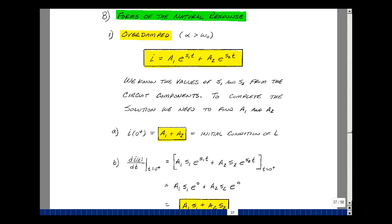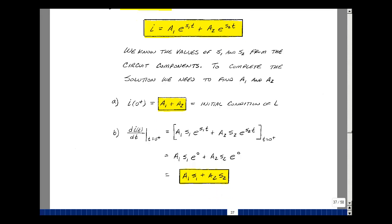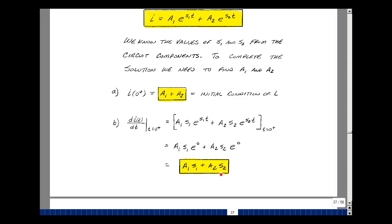We have relationships between the derivative of the current and the voltage across the inductance. Let's take a look at differentiating our current and evaluating that at t equals 0 plus. Differentiating e to the s1t is going to be s1 e to the s1t multiplied by a1, and the derivative of e to the s2t is s2 e to the s2t times a2. Plugging in t equals 0 plus makes these terms equal to 1, so the derivative of I at t equals 0 plus is equal to a1 s1 plus a2 s2.